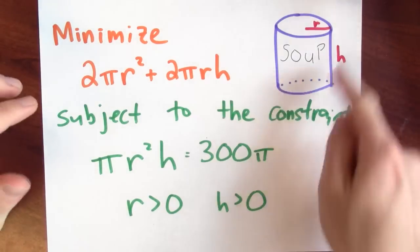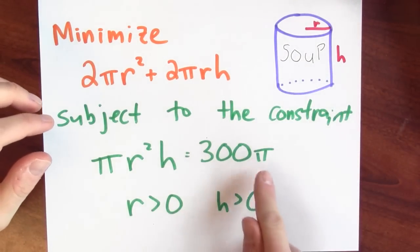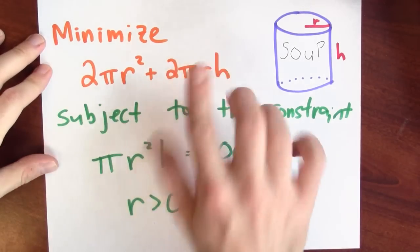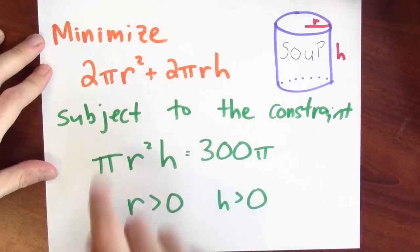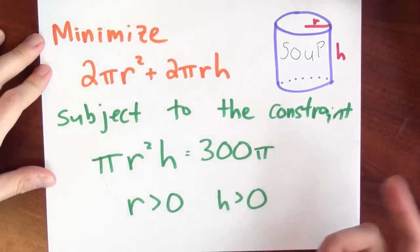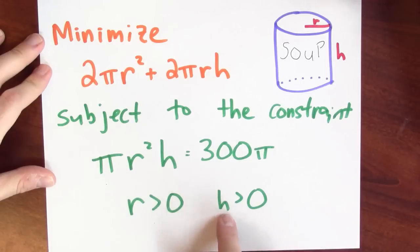Of course, if I wanted to make that surface area as small as possible, I'd just make a really tiny soup can. But there's a constraint. The constraint is that that soup can has to hold 300 pi cubic centimeters of soup. So I'm trying to make this quantity, the surface area, as small as possible, subject to the constraint that the volume of the soup can is 300 pi. And I should also point out that the radius and height had better be positive, otherwise it's kind of nonsense.